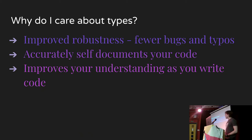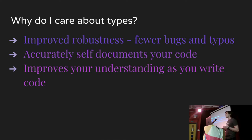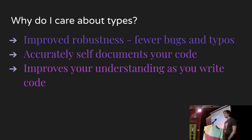Types also improve your understanding of what you're coding. Previously I'd have this fuzzy idea of 'I've got this array of object-y things and they've got some properties' — but they might be used across multiple files and you'll forget about a certain property, and it basically ends up a mess in your head. If you're forced to explicitly write that out, you can go back and check it — it always has to be consistent, and across files it's always going to make sense. It ties your code together in a consistent way.